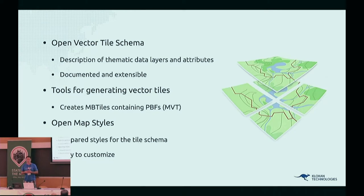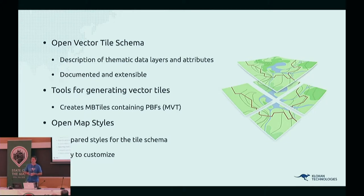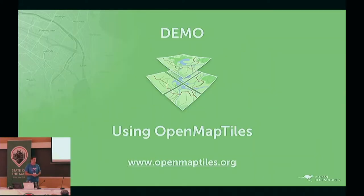The tools are written in Python and combine snippets of individual layers into a single configuration file for the tools used to generate tiles. We also provide a set of OpenMapTiles styles — the look and feel of different maps — for the schema definition of what appears in the vector tiles. These are BSD-licensed, so anybody can use them for business, adjust them as desired, and derive their own map from the vector tiles.